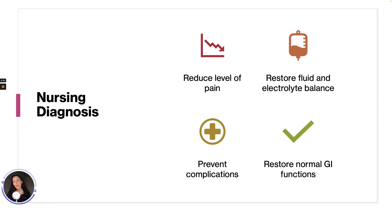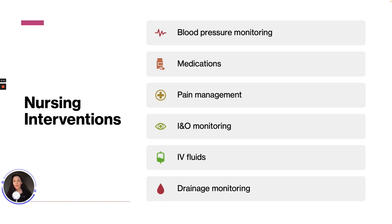Nursing outcomes can include reduced level of pain, preventing complications, restoring fluid and electrolyte balance, and restoring normal GI function. Interventions include blood pressure monitoring, which can be done through an arterial line if shock is present. Medications — we can administer analgesics and anti-emetics. Analgesics and positioning could help decrease pain. We want to record intake and output to help with fluid replacement, monitor IV fluids, and record the character of any drainage post-operatively.